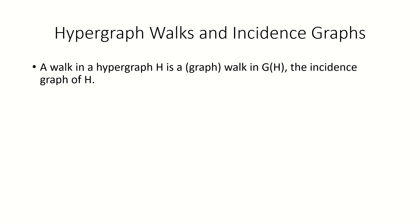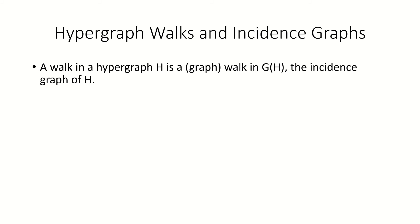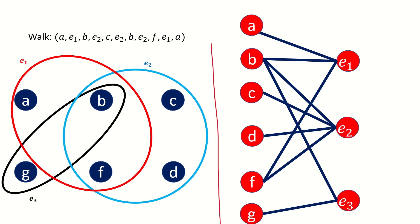It's important to know that a walk in a hypergraph corresponds to a walk in the incidence graph of that hypergraph. For example, the incidence graph of the hypergraph in our previous example is this, and the walk we just looked at corresponds to the following walk in the incidence graph.